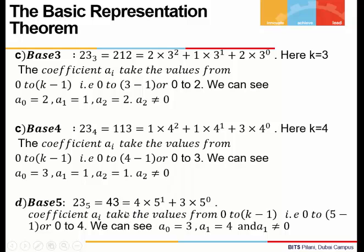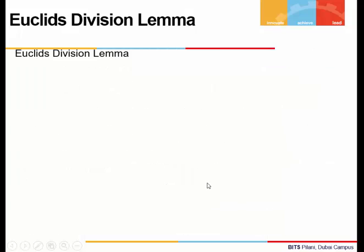For base 5, 23 comes out to be 43 when we divide 23 by 5 repeatedly. Here a_0 is 3 and a_1 is 4, and the coefficient of the highest power of 5 is 4, which is non-zero. The a_i values lie from 0 to 4.